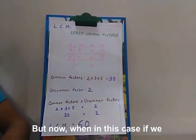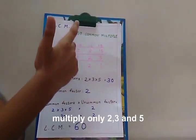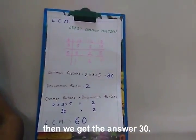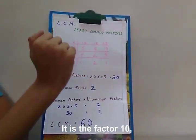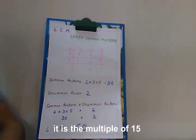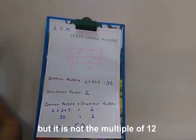But now, if we multiply only 2, 3, and 5, then we get the answer 30. It is a multiple of 10. It is a multiple of 15. But it is not a multiple of 12.